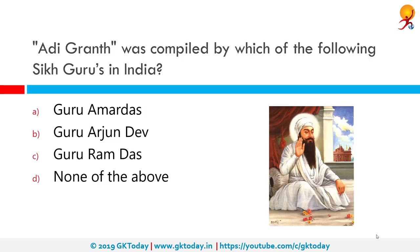Adi Granth was compiled by which of the following Sikh Gurus? The correct answer is Guru Arjan Dev. Guru Arjan was the first of two Gurus martyred in the Sikh faith and the fifth of the ten total Sikh Gurus. He compiled the first official edition of Sikh scripture called the Adi Granth, which later expanded into the Guru Granth Sahib.